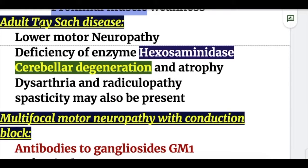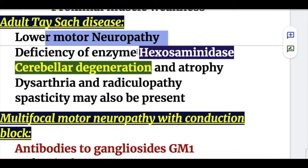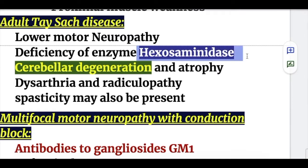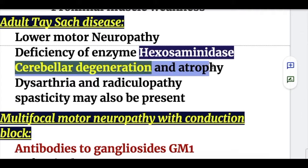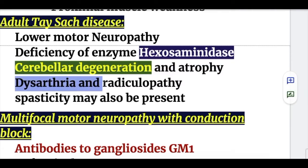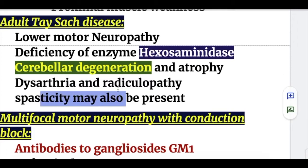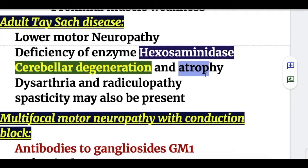Adult Tay-Sachs disease is a lower motor neuropathy with deficiency of the enzyme hexosaminidase, involving degeneration of the cerebellum and atrophy. Features include dysarthria and radiculopathy, though spasticity may also occur.